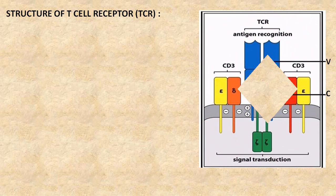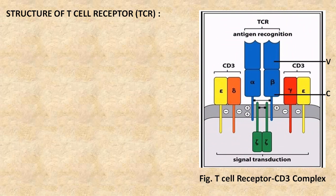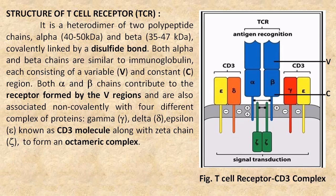Now we will see the detailed structure of a T cell receptor. It is a heterodimer of two polypeptide chains: alpha, which is 40 to 50 kilodalton, and beta, which is 35 to 47 kilodalton, covalently linked by a disulfide bond. Both alpha and beta chains are similar to immunoglobulin, each consisting of a variable and constant region.